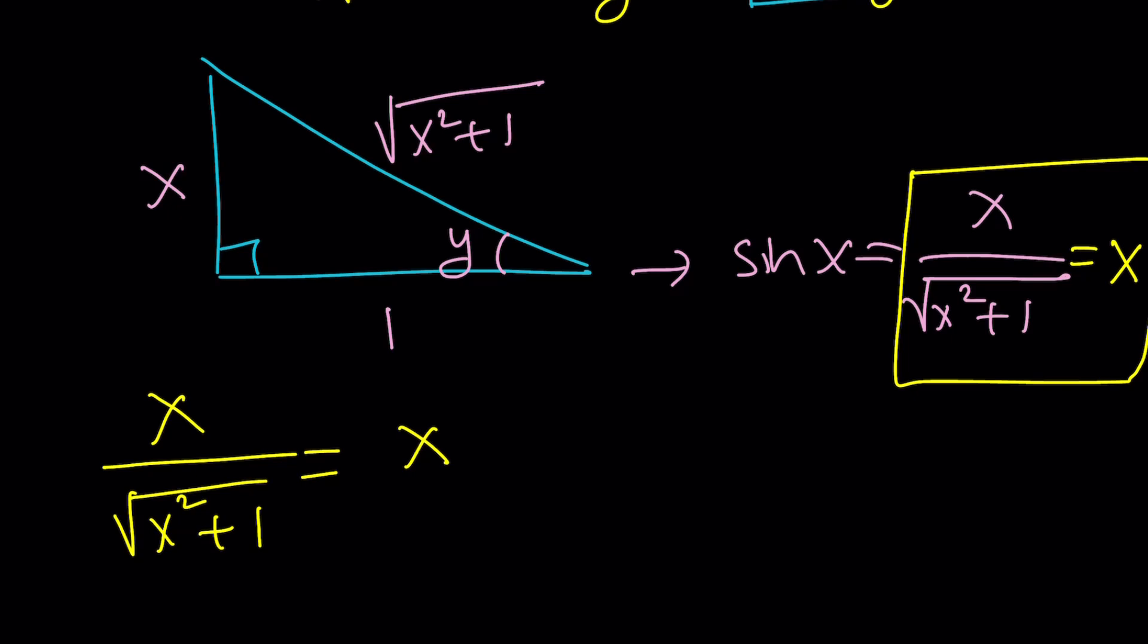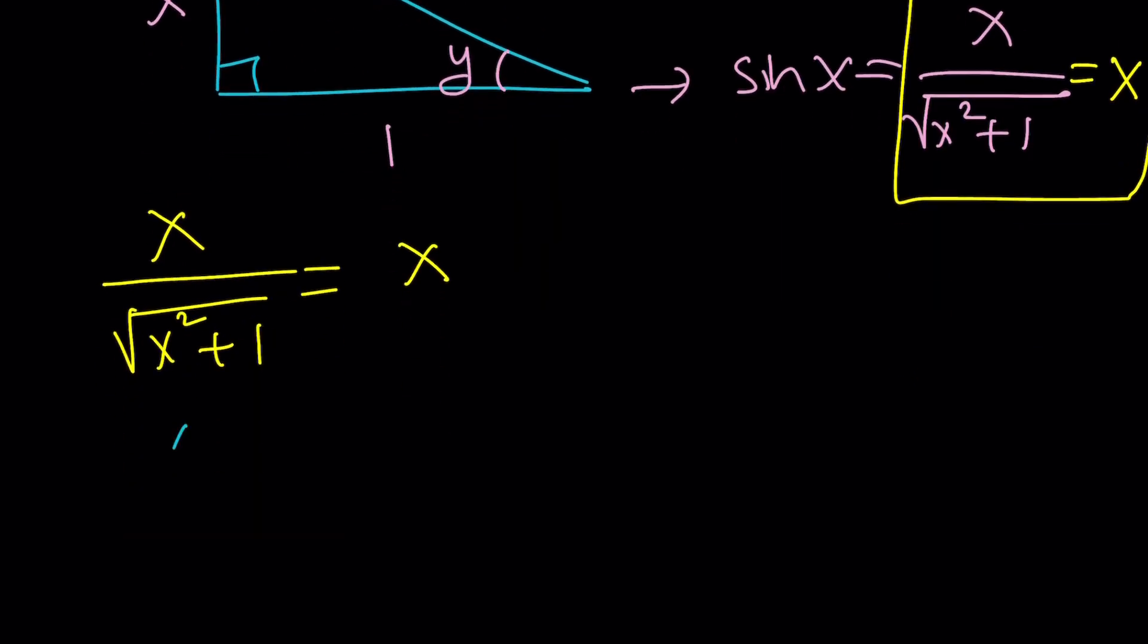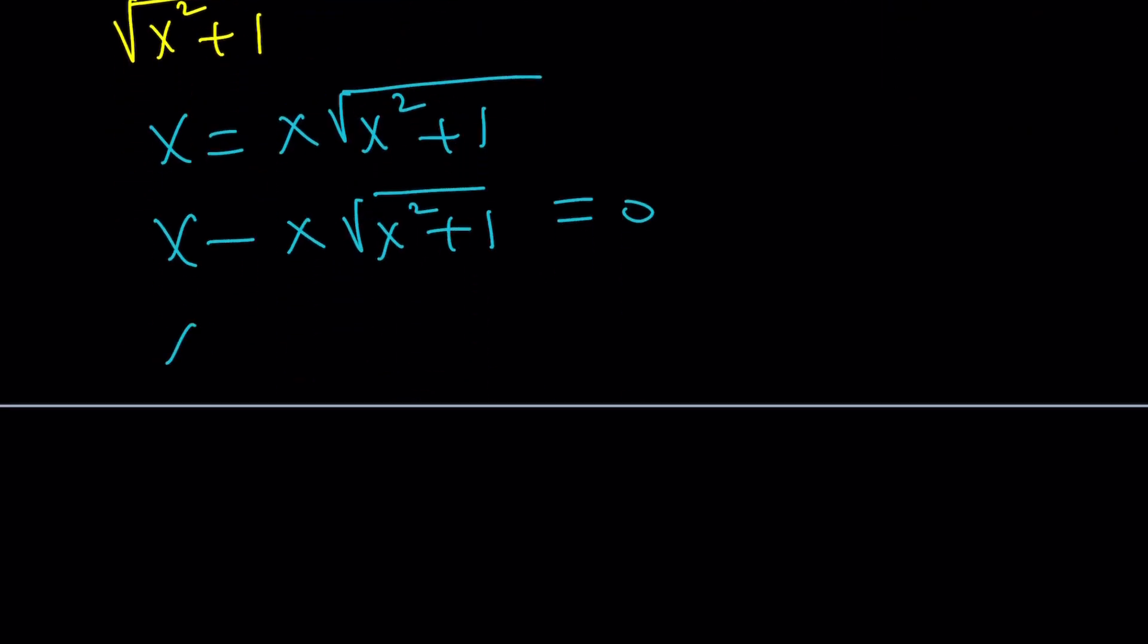So how do you solve it? Same method. Cross multiply. Put everything on the same side. And factor. And guess what that's going to give you? That's going to give you x equals 0 from here, and x equals 0 from here, because 1 minus square root of x squared plus 1 equals 0.